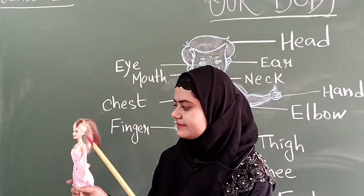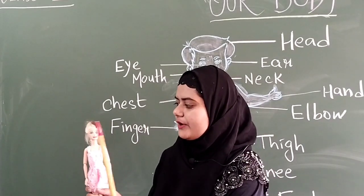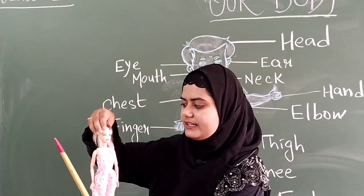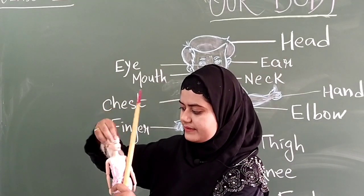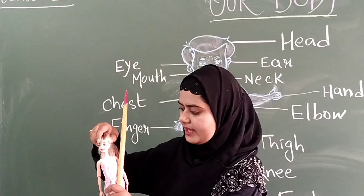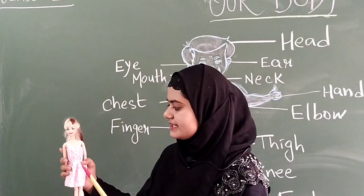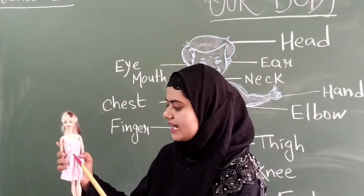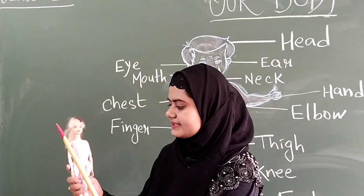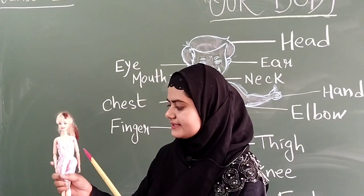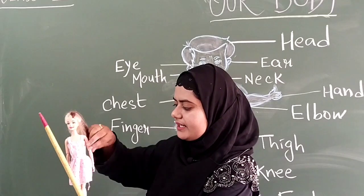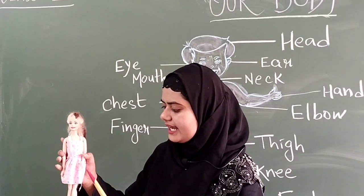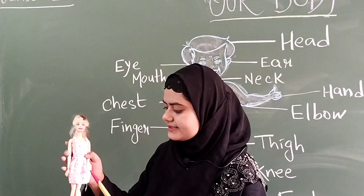This is ear. This is neck. With the help of neck we can turn our head like this. This is chest. This is stomach. This is hand. This is elbow. We can move our elbow. Now this is hand.